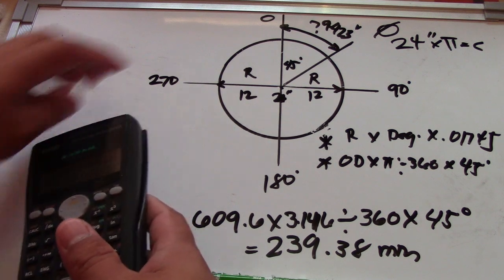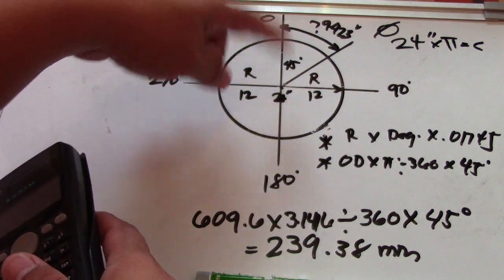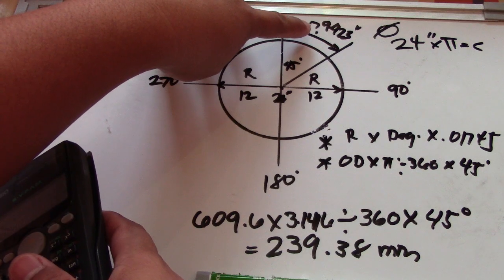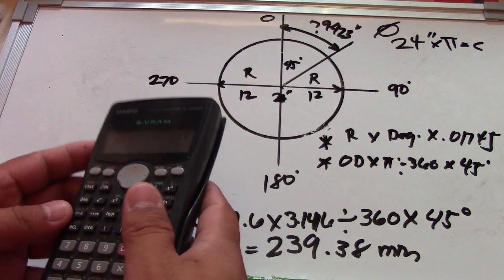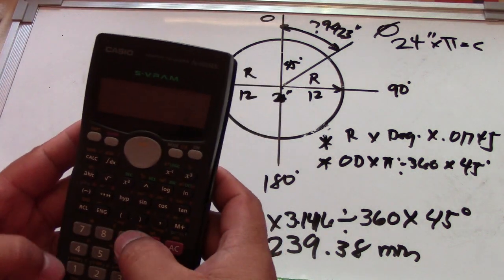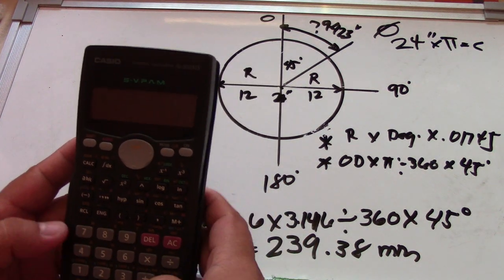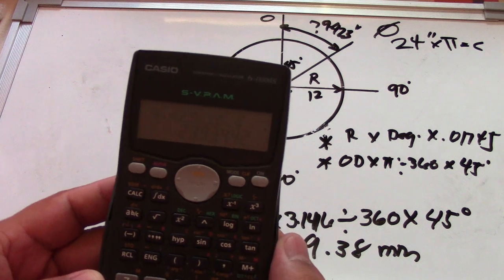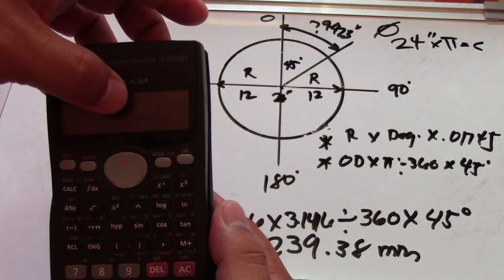We will now check if Formula 1 gives the same answer in millimeters. The Formula 1 result was 9.423 inches. Multiplying 9.423 by 25.4 to convert to millimeters — sorry for the blurred calculator — the answer is 239.3 mm. Same answer.